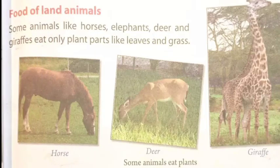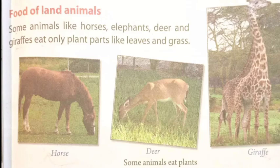Food of land animals: some animals like horses, elephants, deer and giraffes eat only plant parts like leaves and grass. As you can see from the pictures, horse, deer and giraffe are shown — these animals are plant-eating animals.